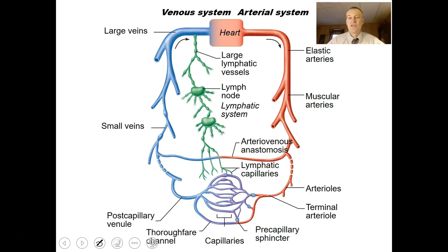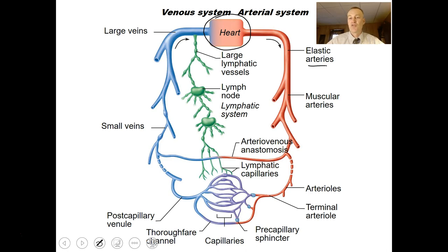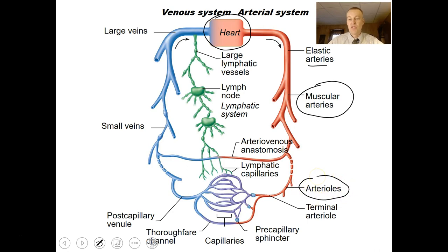The heart is a pumping organ that pumps blood into arteries. The first arteries are called elastic arteries — they have the ability to stretch. We then go through a series of muscular arteries, and the various arteries get smaller and smaller until they terminate into arterioles. A terminal arteriole will feed directly into a capillary bed.